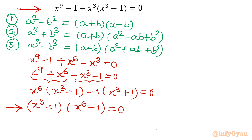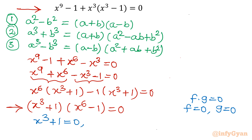Since the product f times g equals 0, we conclude f equals 0 or g equals 0. So we write x cubed plus 1 equals 0, giving three roots from this equation, and x power 6 minus 1 equals 0, giving six solutions from this equation. Let us solve one by one.